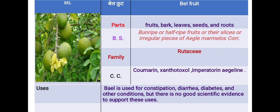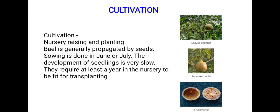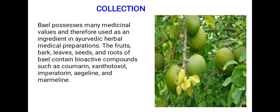Cultivation: Bael is generally propagated by seed sowing, done in June or July. The development of seedlings is very slow; they require at least a year in the nursery to be fit for transplanting. Collection: Bael possesses many medicinal values and is therefore used as an ingredient in Ayurvedic herbals.